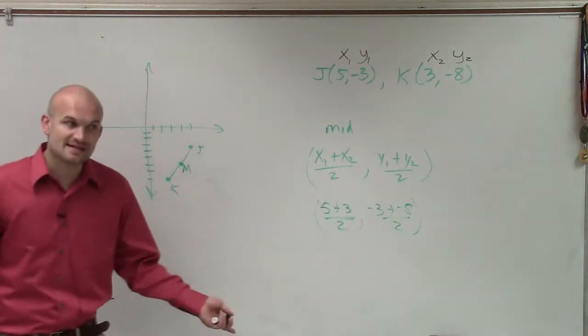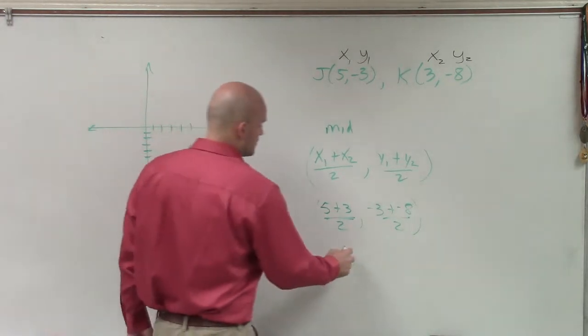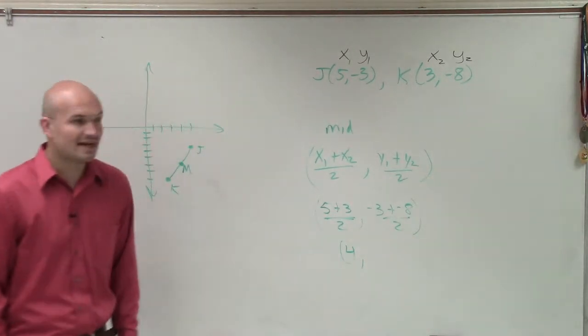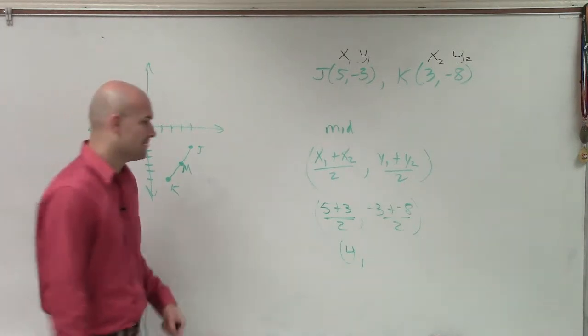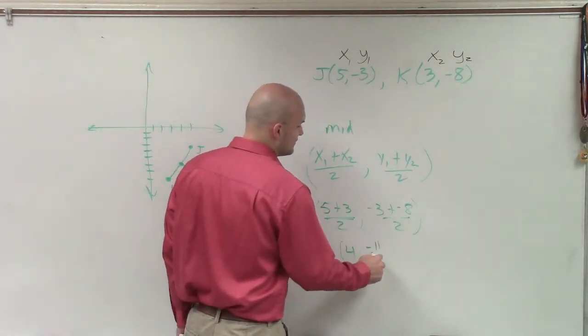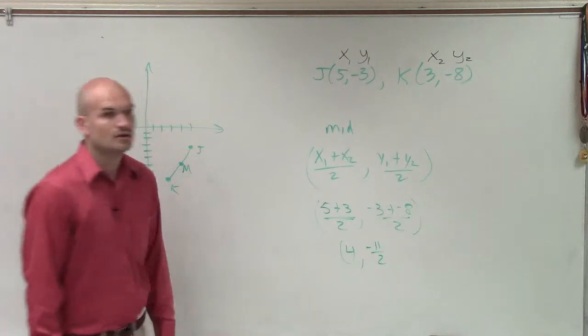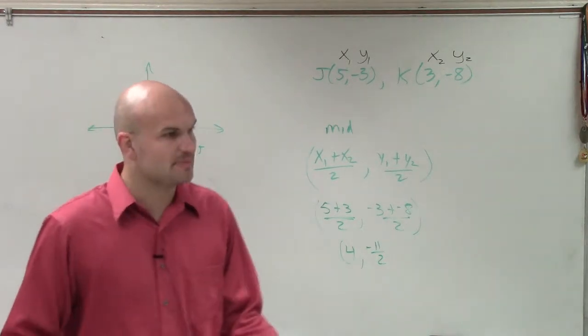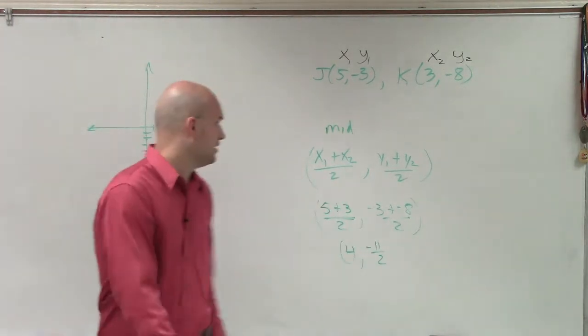Well, 5 plus 3 is 8. 8 divided by 2 is 4. And negative 3 plus negative 8 is negative 11 divided by 2. I'm just going to leave it as negative 11 over 2, which, if you want to convert to your decimal, would be negative 5.5, right?